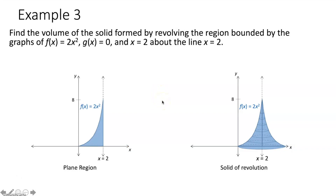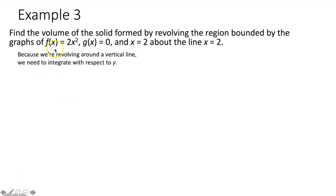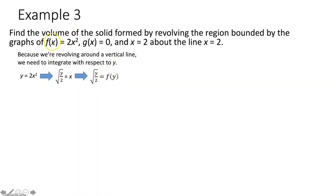To set up the integral, we first need the interval. But our function is given in terms of x, and we need to integrate with respect to y. So rewrite f(x) = 2x² as y = 2x² and solve for x: divide by 2 and take the square root to get x = ±√(y/2). We take the positive version, so our new function is f(y) = √(y/2). This gets our function in terms of y for integration.